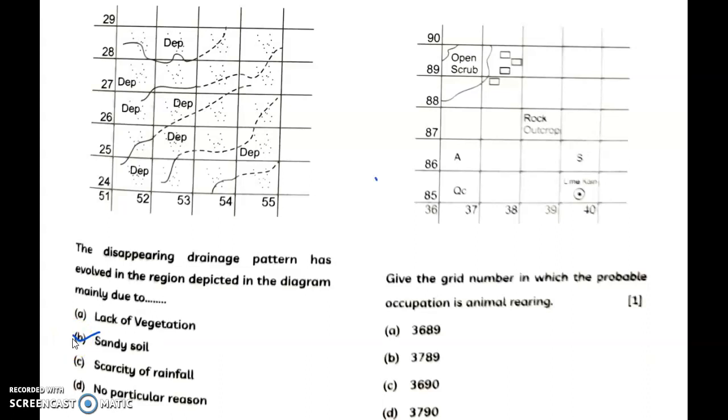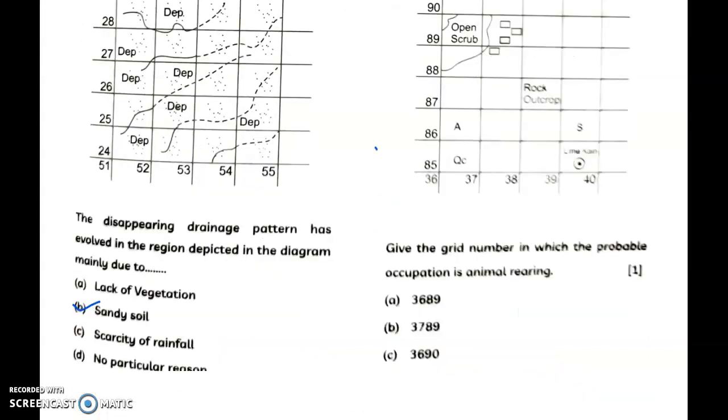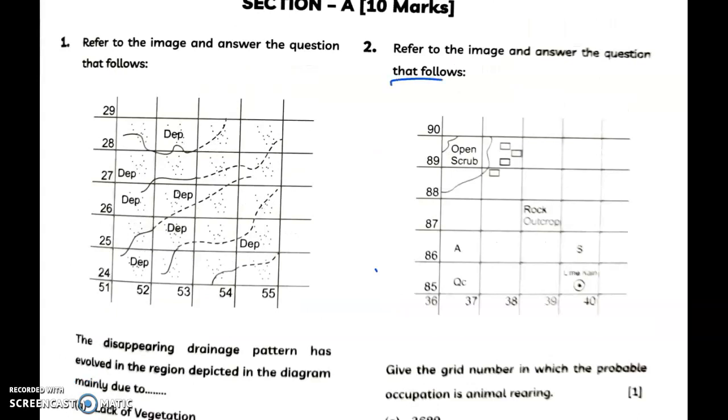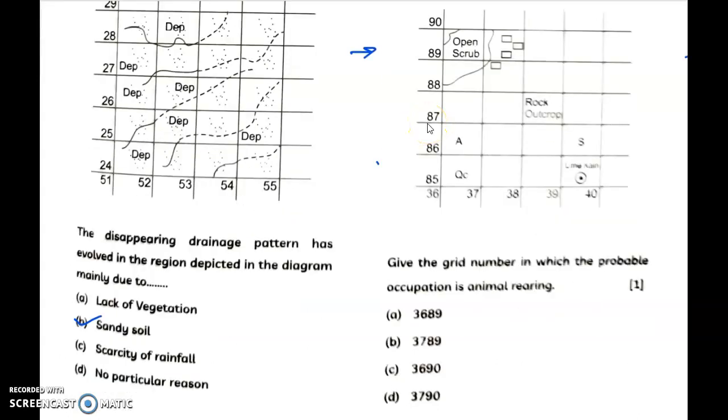Moving to the next question, you can see that this is the diagram. Refer to the image and answer the question that follows. You have to see this diagram - this is a toposheet, and you must learn all the important symbols. Give the grid number in which the probable occupation is animal rearing. Answer is option A, that is 3689.